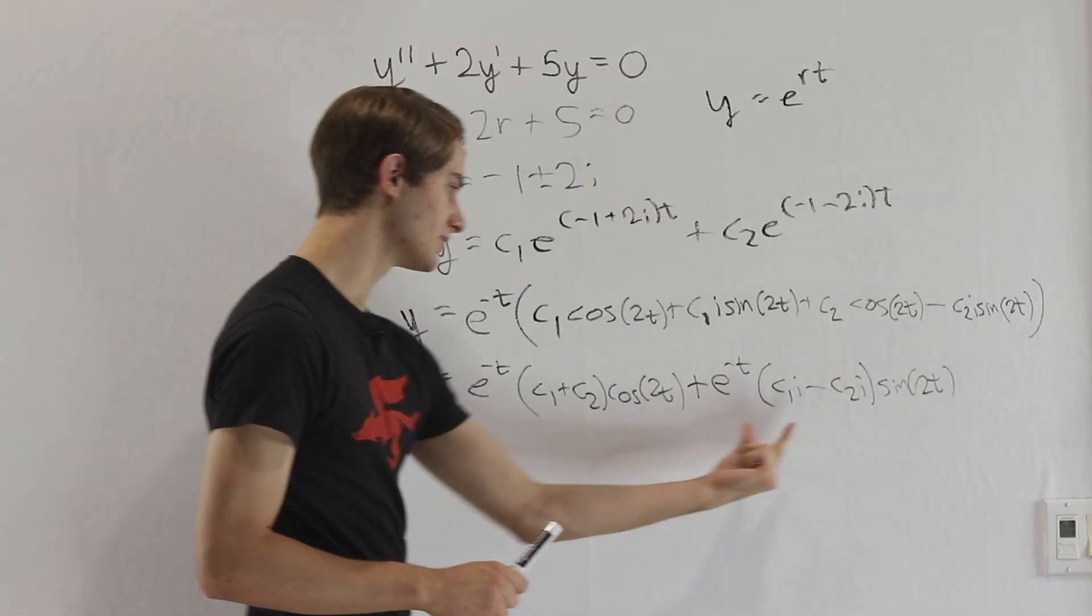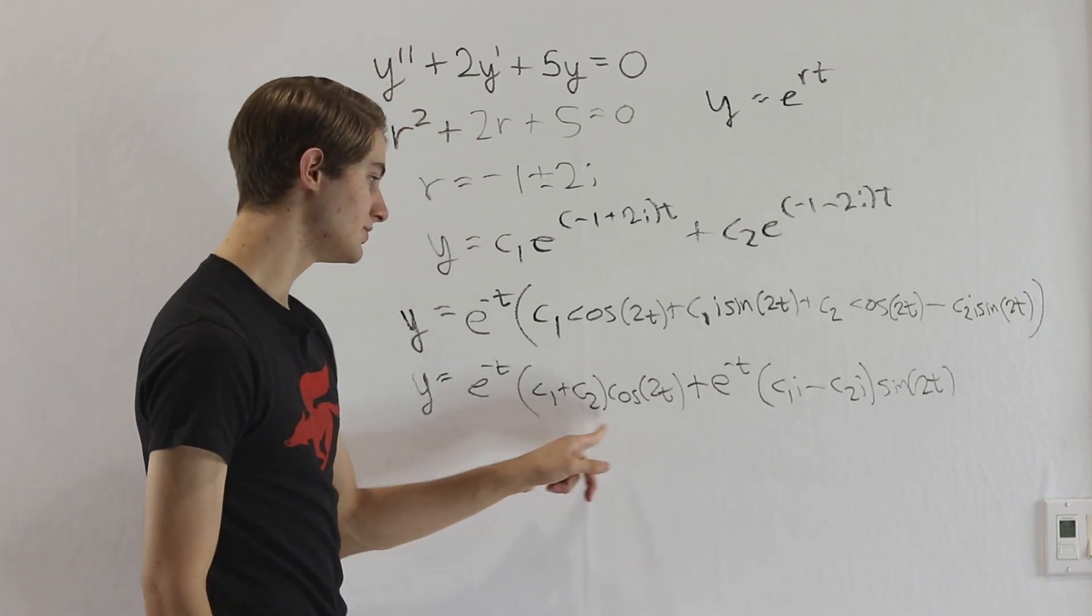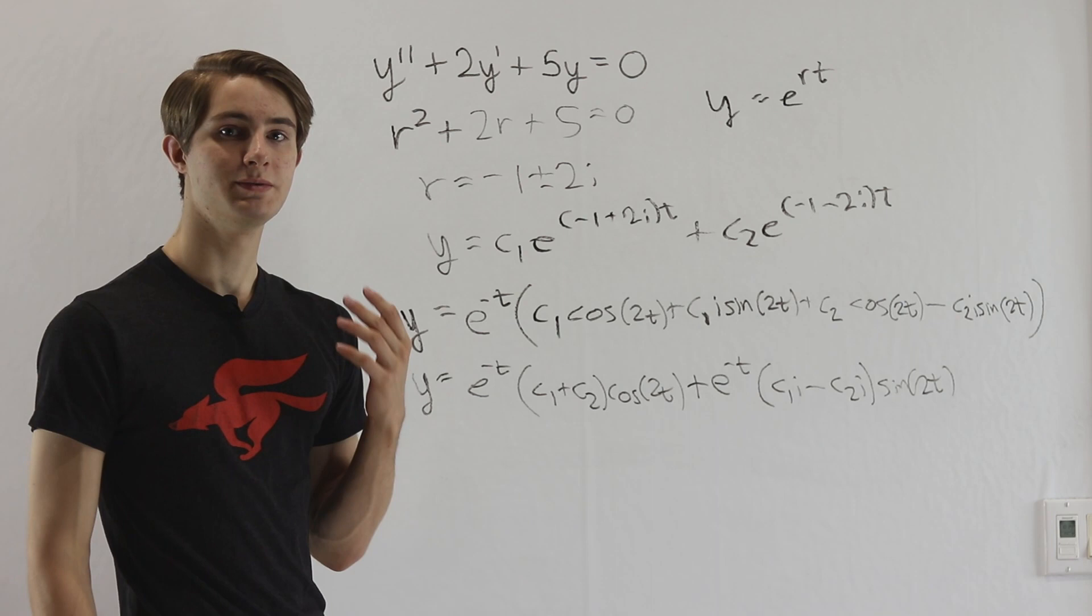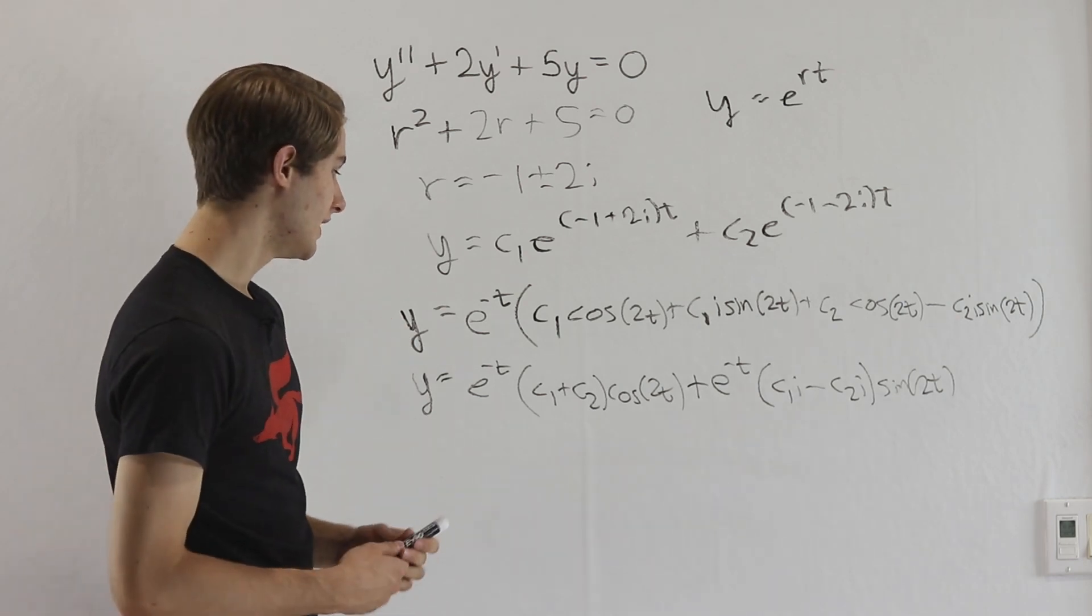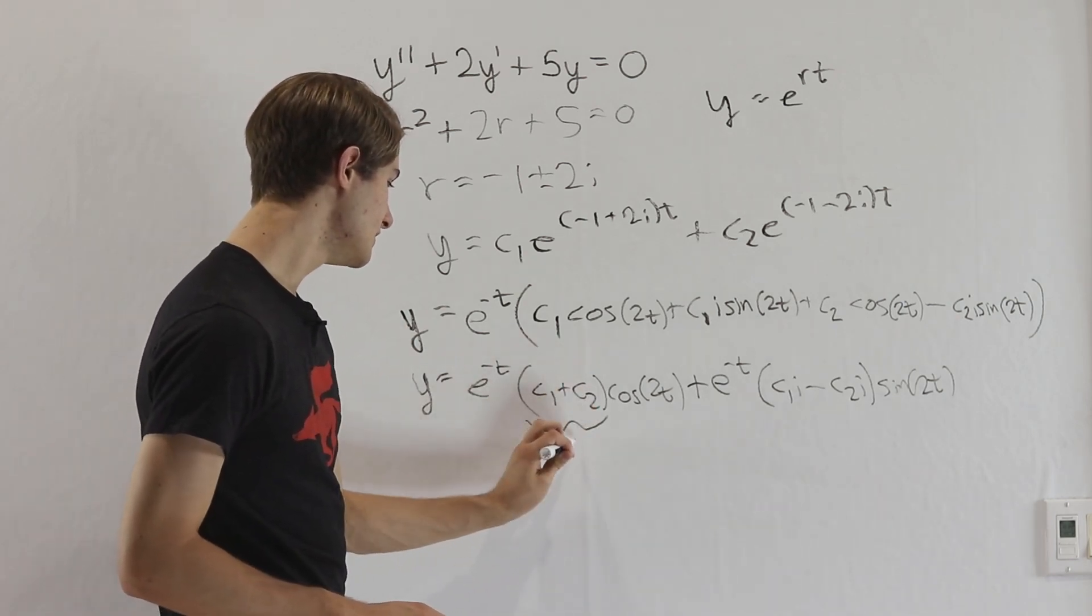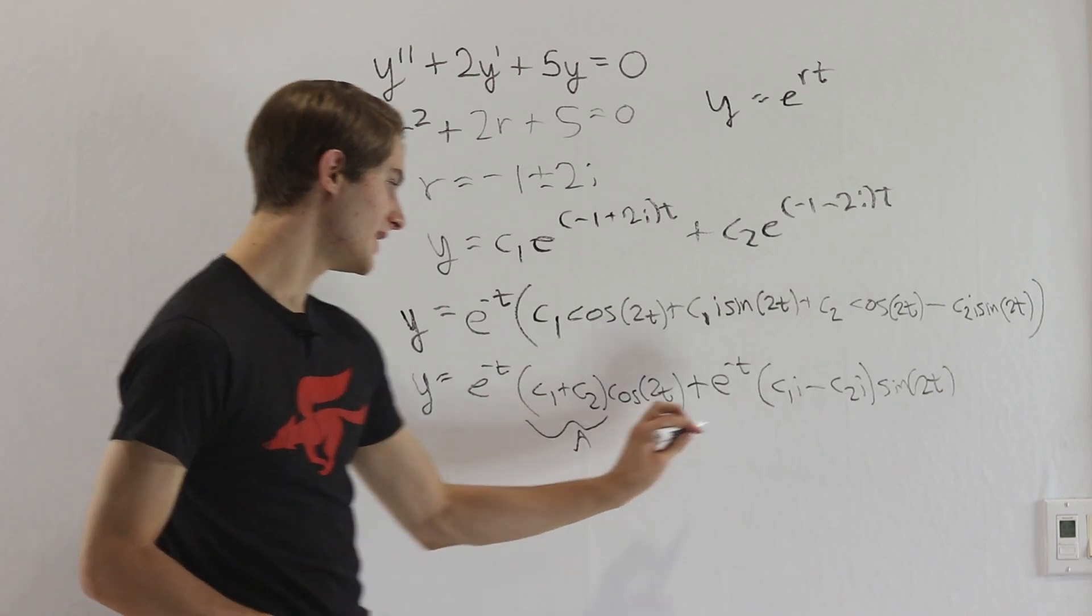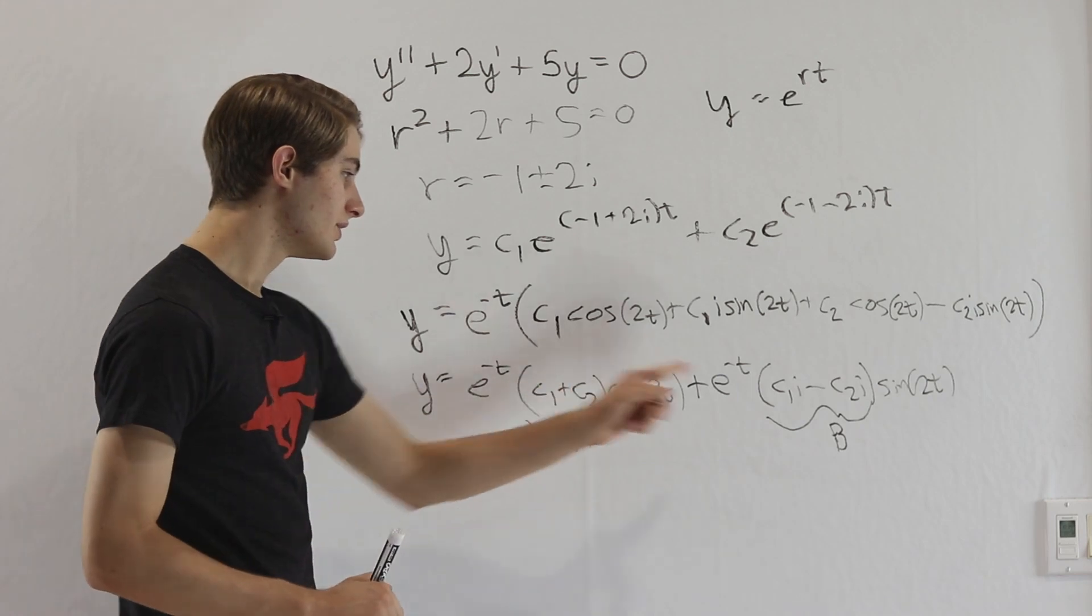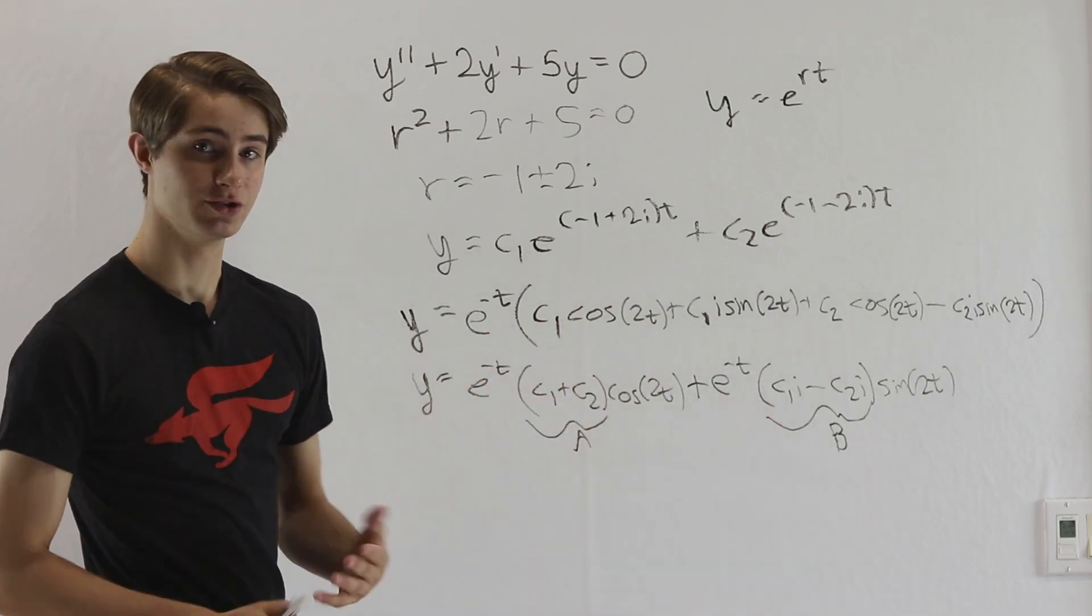And if we look at these two things right here, c1 plus c2 and c1i minus c2i, those are both going to be arbitrary constants. And in fact, if we wanted to say c1 plus c2 equals some number a, and c1i plus c2i equals some number b, these equations are always going to have a solution.